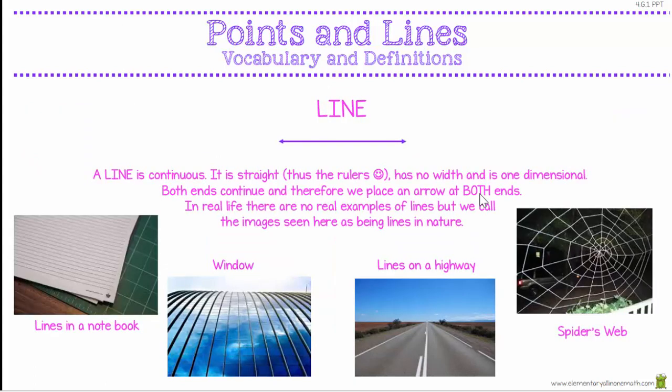Let's look at the line. The line is continuous. It is straight and has no width and is one dimension — length. Both ends continue, therefore we place an arrow at both ends. In real life there are no real examples of lines, but we call the images seen here lines in nature. You can see the lines in your notebook, the lines made by metal in a building, the lines on a highway, or even the lines in a spider's web.